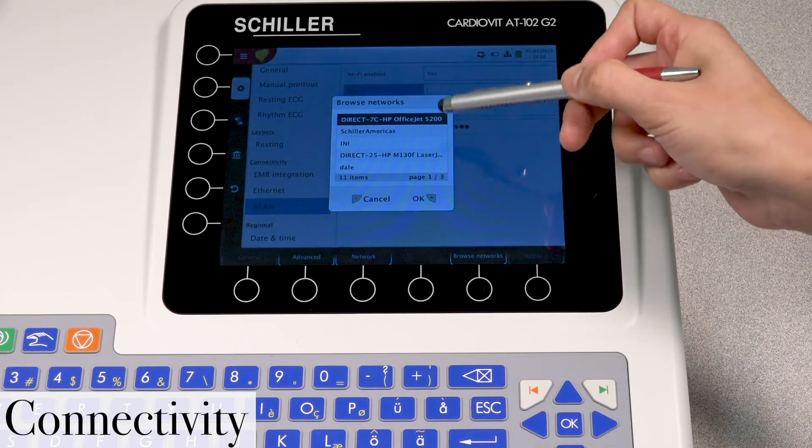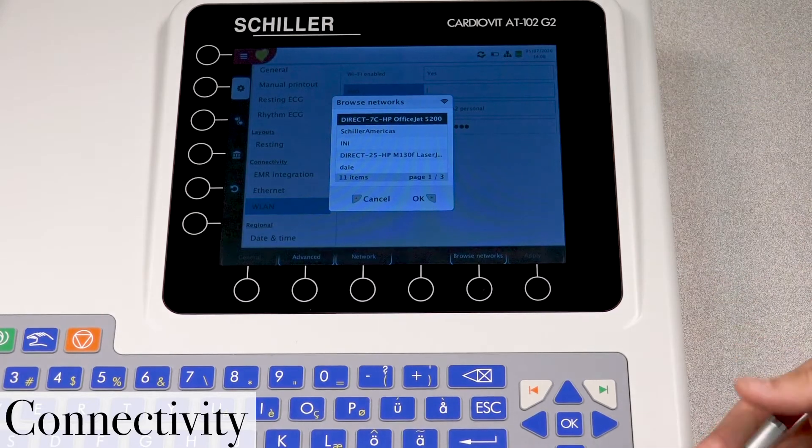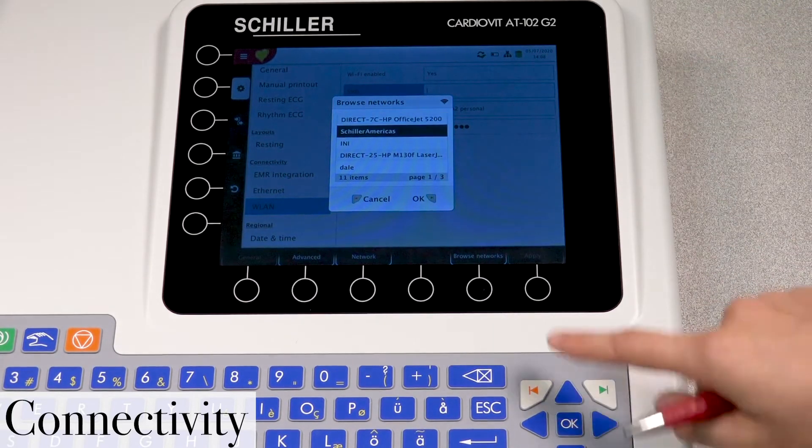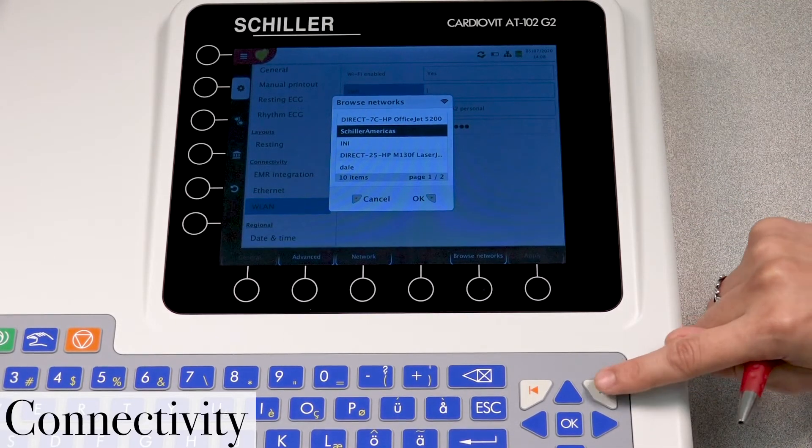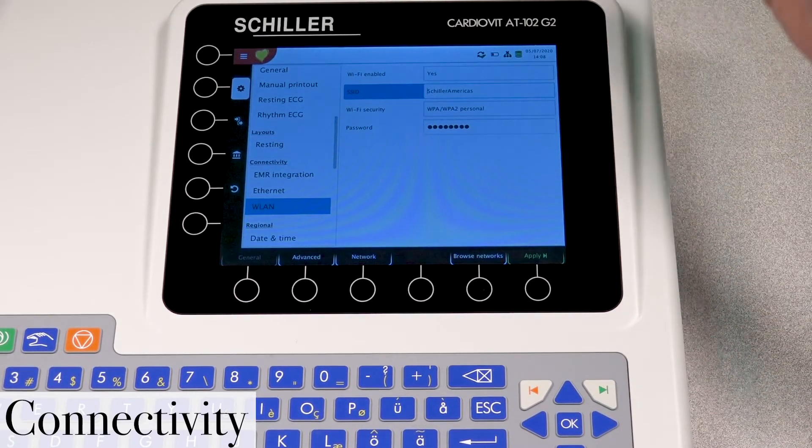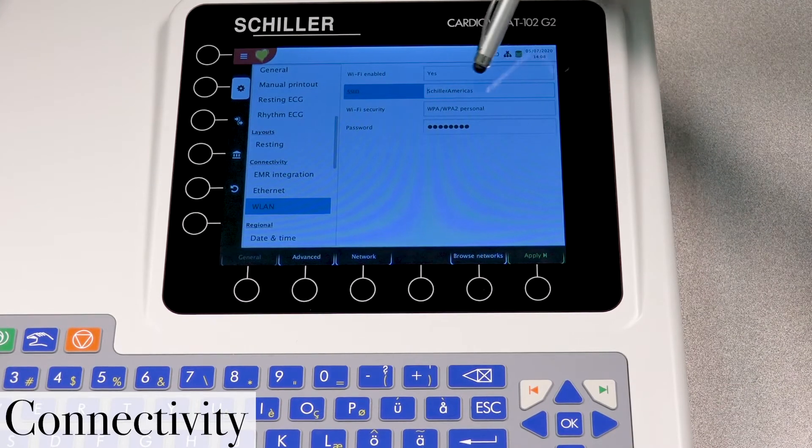And it's going to show you a list of all the different Wi-Fi networks available. In this case, we're going to select Shiller Americas. We're going to press this green button here for OK. And now we have the selected Wi-Fi network here.